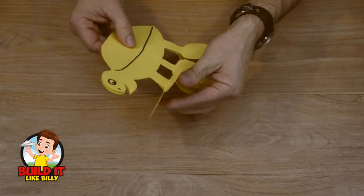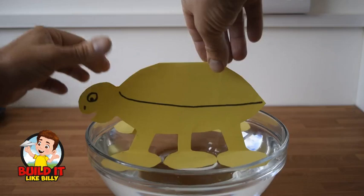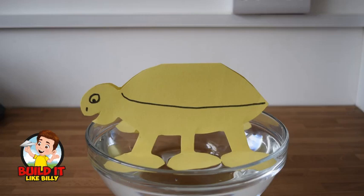So to get him to float, we need to fold the feet out so they sit flat on the ground. You can actually, before putting him in water, just stand him up. Right, let's see if our bug floats. There's our floating water bug.